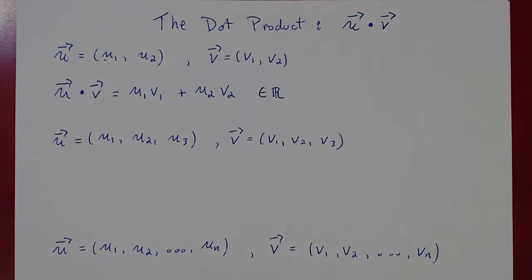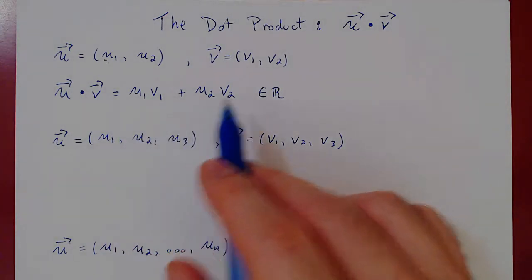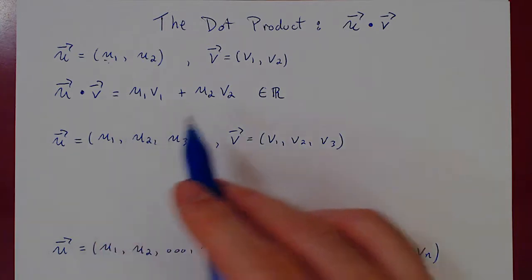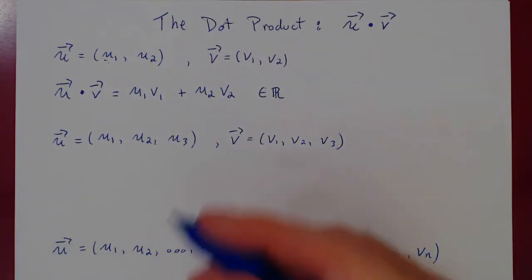We'll look at this first algebraically, and then we'll realize that there is a really subtle but deep geometric meaning that's hiding in this simple-looking algebraic operation. Every time that you were multiplying matrices, geometry took place — you just were not aware of it.